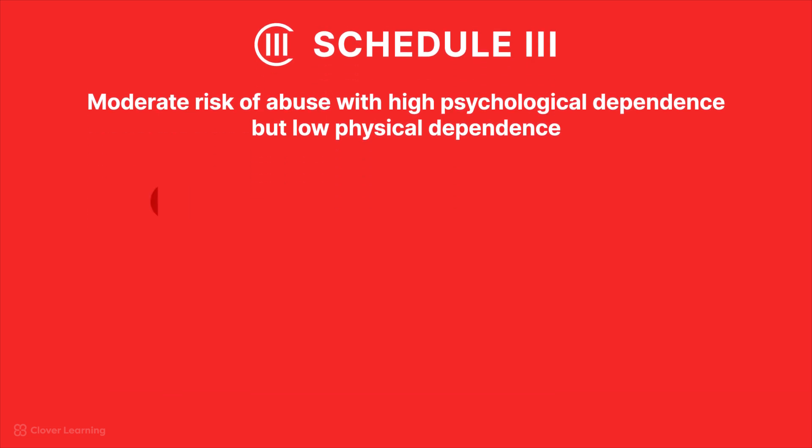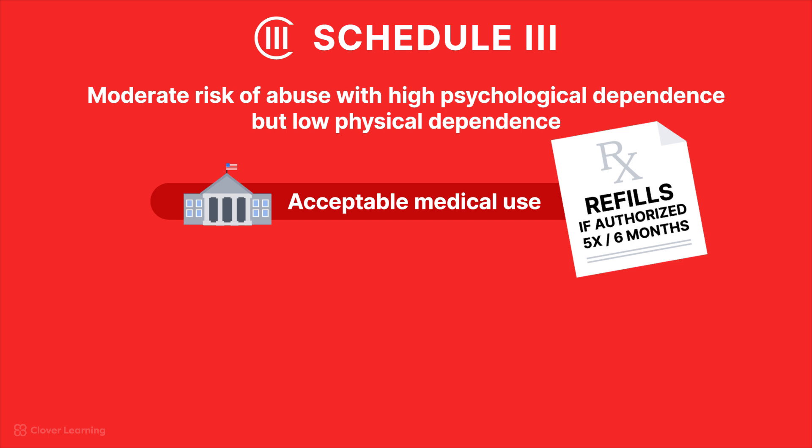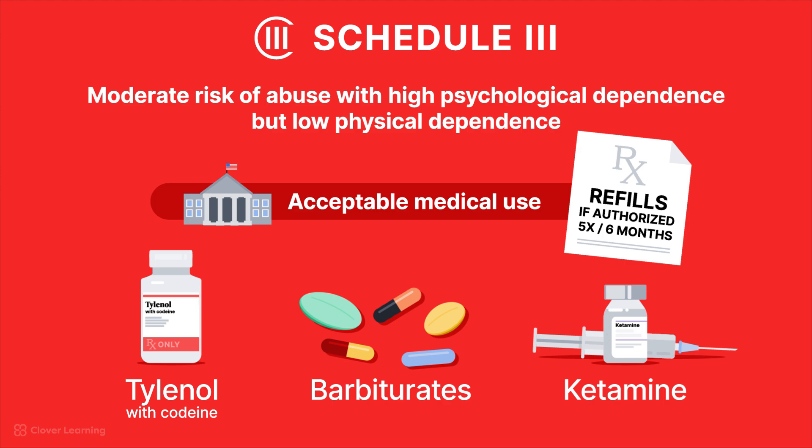Schedule III drugs have a moderate risk of abuse with high psychological dependence but low physical dependence. These drugs have acceptable medical uses such as anesthetics, pain management, and insomnia management. Prescriptions may be refilled five times in six months if authorized by a provider. Common examples include Tylenol with codeine, barbiturates, and ketamine.